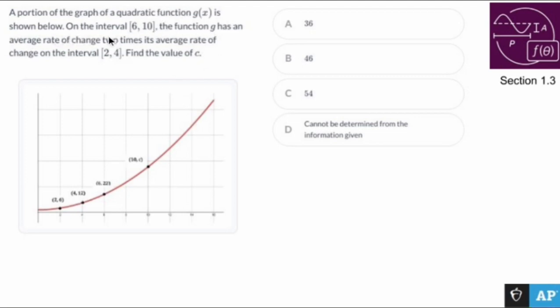On the interval 6, 10—I know the numbers are hard to see—the function g has an average rate of change two times its average rate of change on interval 2, 4. Okay, so here's 2, 4.